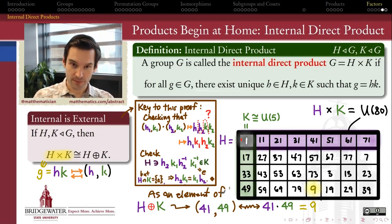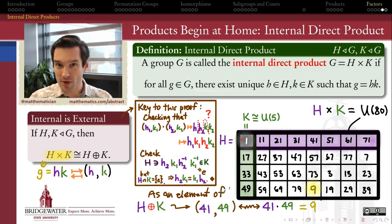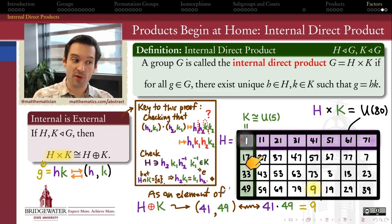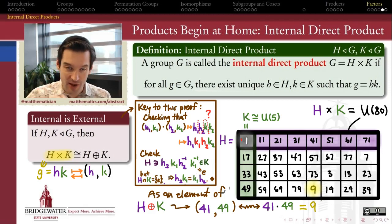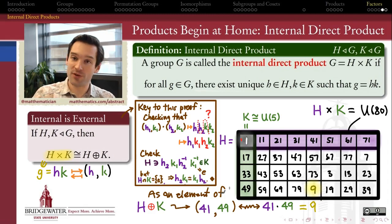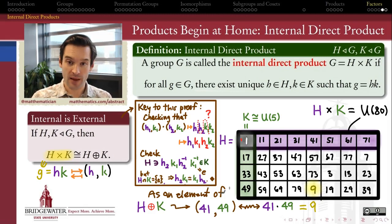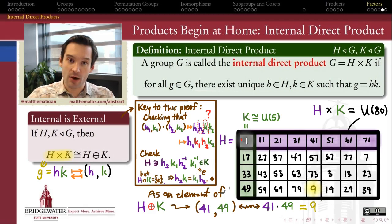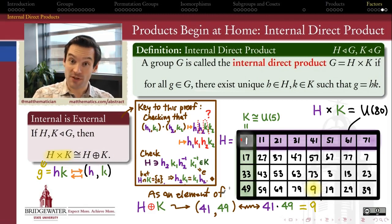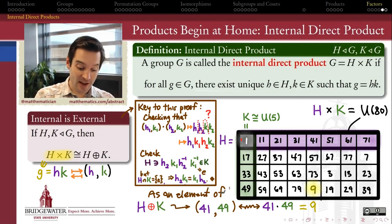So the really good news is that we've learned a new kind of product — the internal direct product — in which two normal subgroups of G, perpendicular or orthogonal to each other, combine to form an internal times table for the entire group. That's how we can build a larger group out of its normal subgroups. But at the same time, up to isomorphism, it doesn't give us a new kind of product — up to isomorphism, it's the same thing as taking the external direct product of those two subgroups, pretending they didn't reside within the original group to begin with.